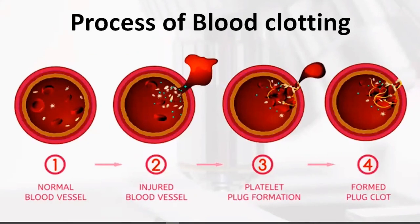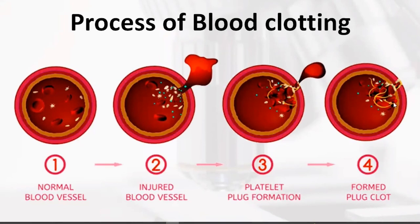In the blood clot process diagram: the first image shows a normal blood vessel with no injury. When the vessel is injured, platelet plug formation occurs. Blood is initially released, but in the final step, no further release of blood occurs and blood clot formation is successfully completed.